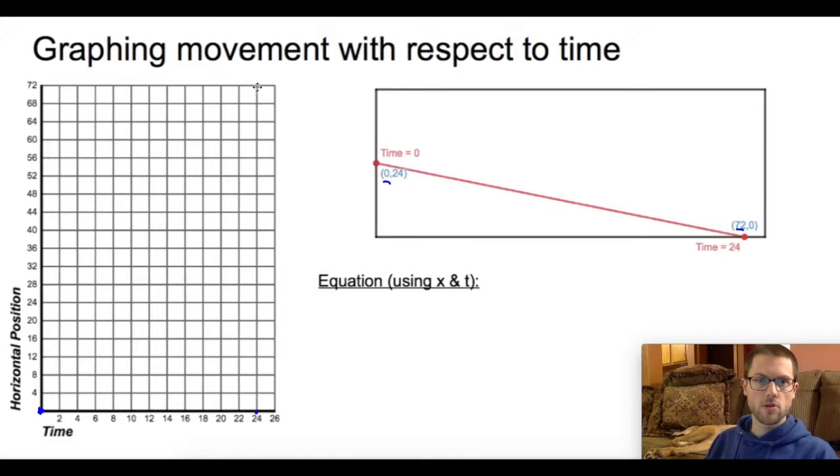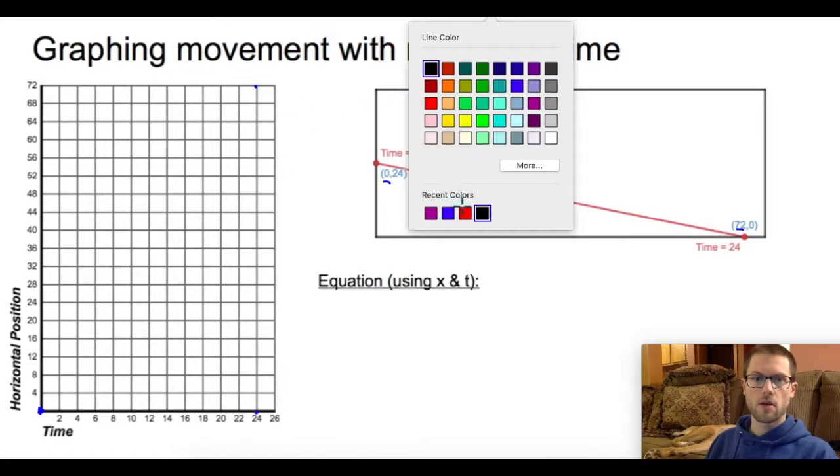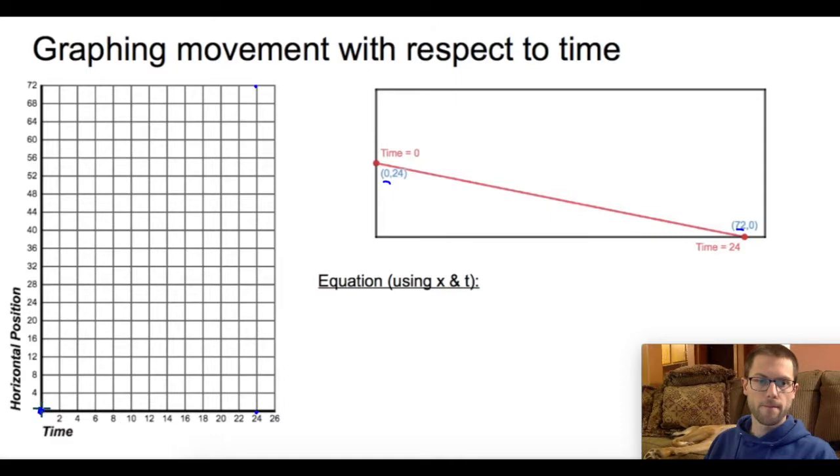So 24 seconds, 72 is right here. So let's connect these dots with a line and let's make that red here. So this line represents the horizontal position across this rug given a certain time. So I can kind of use this graph to figure out, at 10 seconds, how far across the rug is Eliana or how far across the rug at 20 seconds is Eliana. And this is just giving me my left and right distance, nothing about my up or down or my vertical position.